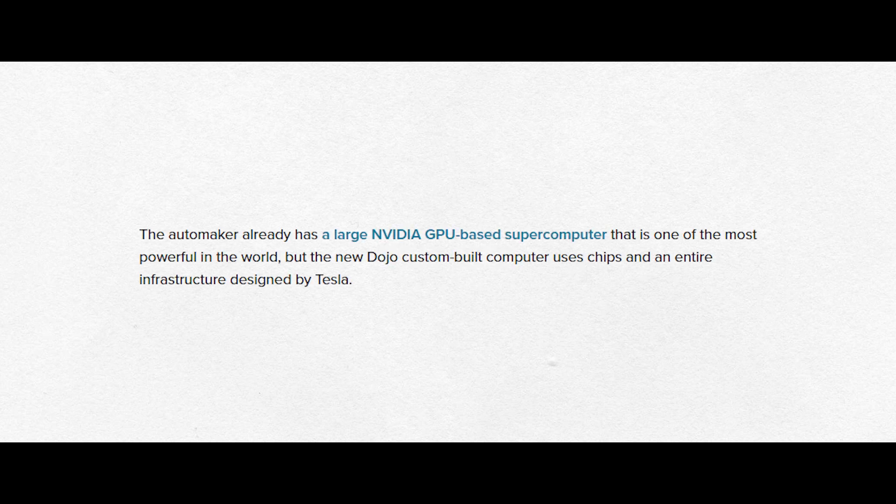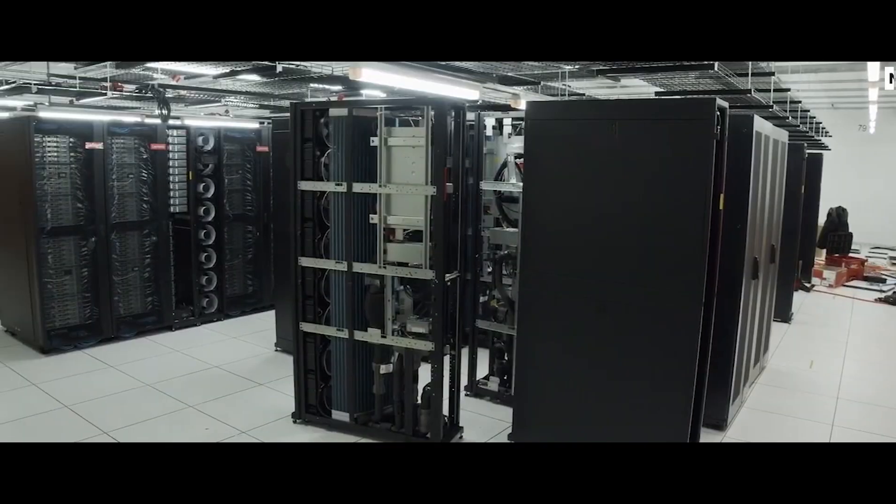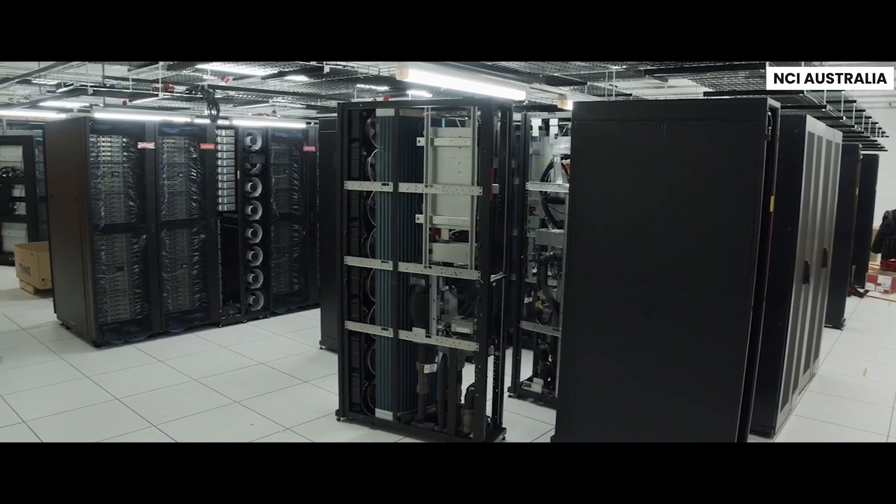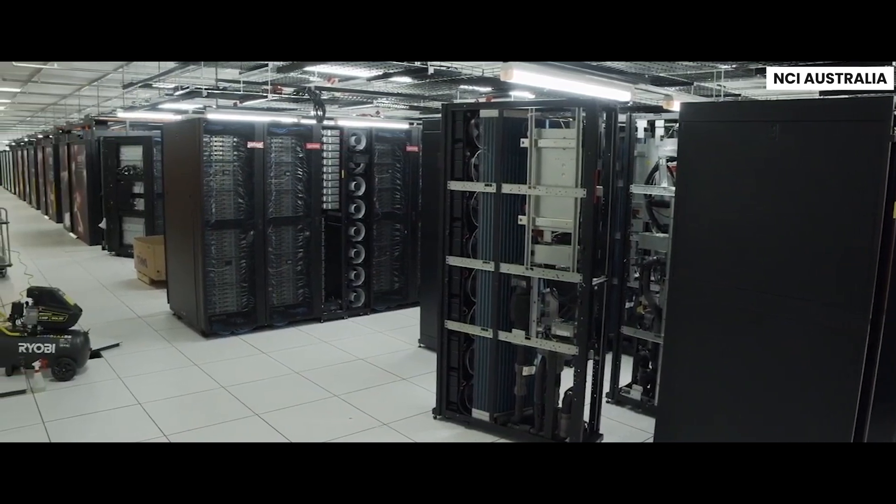You see, Tesla already has a super powerful computer using Nvidia GPUs, but this new Dojo supercomputer is going to be even more special. It uses chips and an entire infrastructure created by Tesla, specifically tailored for training their neural networks.